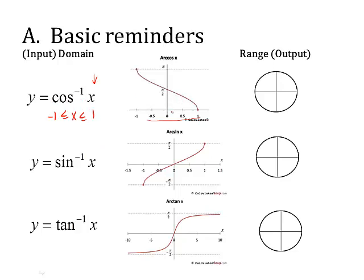For arc cosine, look at the y-axis — it goes from 0 to pi. So when you draw your little circles, you're going to highlight the rainbow, because that's the region where you find your answer for arc cosine. If the arc cosine value is positive, it's in quadrant 1. If it's negative, it's in quadrant 2. Know those range outputs and draw those circles with each problem.